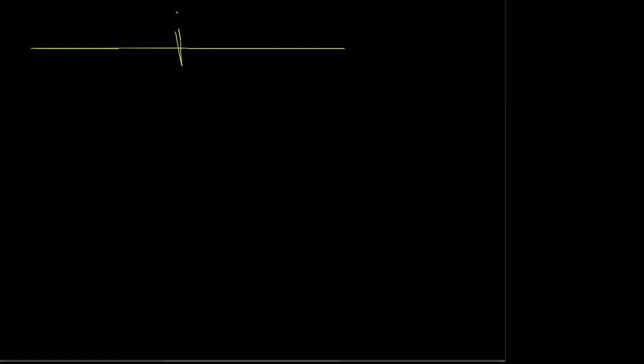We're dancing right into chapter 4 here, and we're going to need to talk about our numbers a bit. Specifically, we're going to need to look at our number line and recognize that we have many different types of numbers. The first type that we learn are usually our counting numbers, where we go from 0, 1, 2, and so on, all the way up to infinity, hiding off there on the right of our graph.